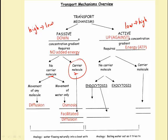As far as the active mechanisms go, you can have active mechanisms that require no carrier molecule, or that require a carrier molecule. The two types that require no carrier molecule are called endocytosis and exocytosis, and there are two types of endocytosis: phagocytosis and pinocytosis. The kind of active transport that requires a carrier molecule — and I know this is going to sound confusing — the name of this type of active transport is, are you ready for this? Active transport.